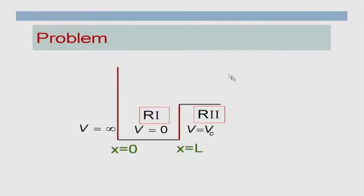This particular problem is a mixture of particle in an infinite box and a particle in a finite box. You have a box between x equals 0 and x equals L. Like the particle in an infinite box, for all values of x less than 0, the potential energy is infinite. While for x greater than L, the potential energy is V₀, which is finite. In that sense, this is not a symmetrical problem unlike the problems we have solved so far.